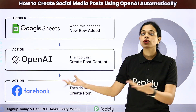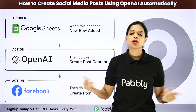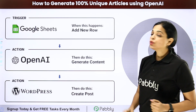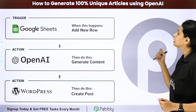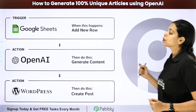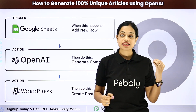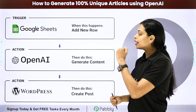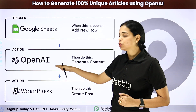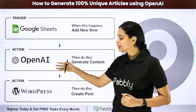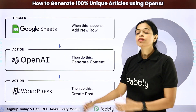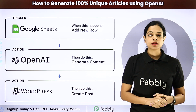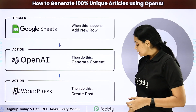The same thing can be done on Twitter, Instagram, or Snapchat. Next, we have how to generate 100% unique articles using OpenAI. Writing articles is definitely cumbersome, so again, here you have the titles, you generate the content, and then you can update it or post it on WordPress or any other medium.